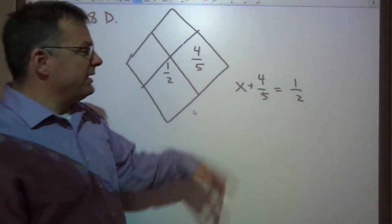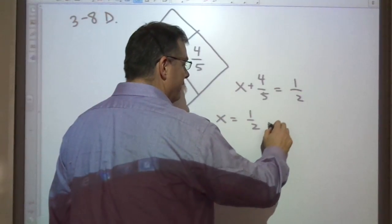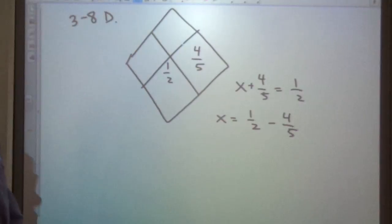So to get x by itself I'm going to subtract 4/5ths from both sides. So if I do that I have 1 half minus 4/5ths. And this is the heart of what we're trying to figure out. How do you add and subtract fractions?